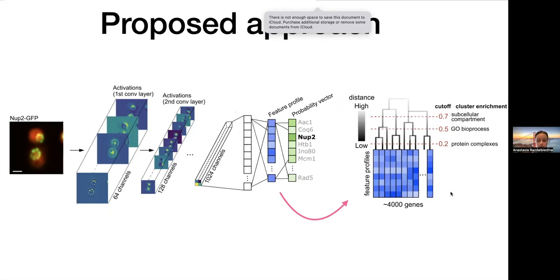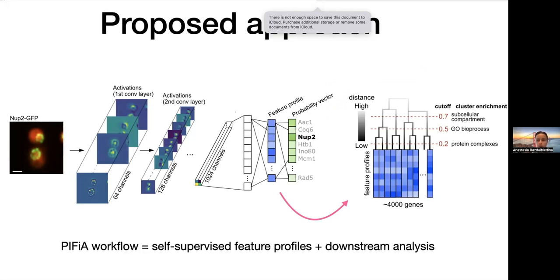As an example, we can use those feature profiles to construct a global hierarchy map of protein functional organization. Depending on the level of the map at which you survey it, you can uncover different types of protein functional relationships. The PFIA workflow consists of the self-supervised feature profile extraction using a convolutional neural network, followed by many different downstream analyses.